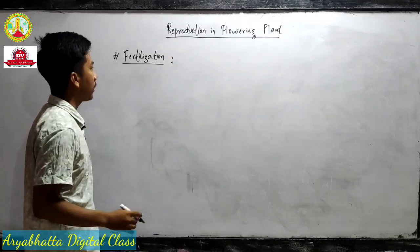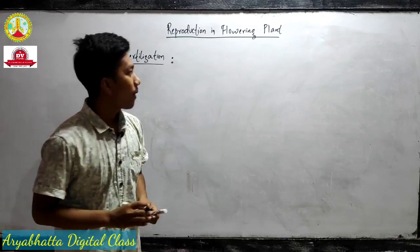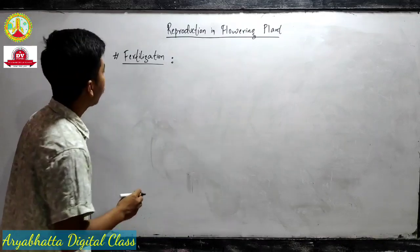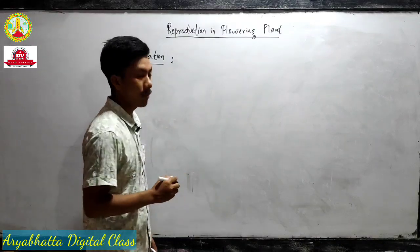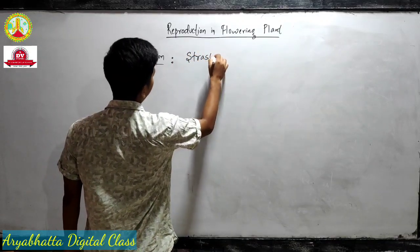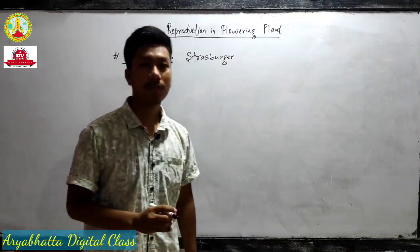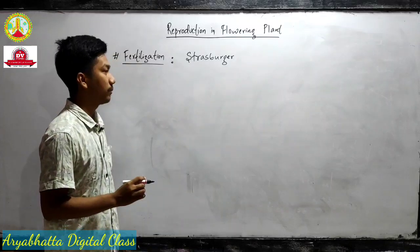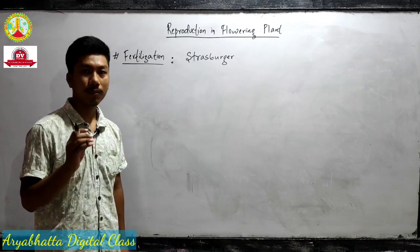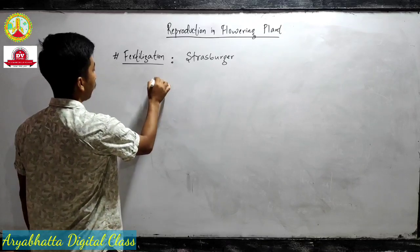Fertilization is the fusion of male and female gametes. The first thing to remember is that fertilization was first discovered by a scientist known as Strassburger. Now we will discuss the process of fertilization in detail, step by step.